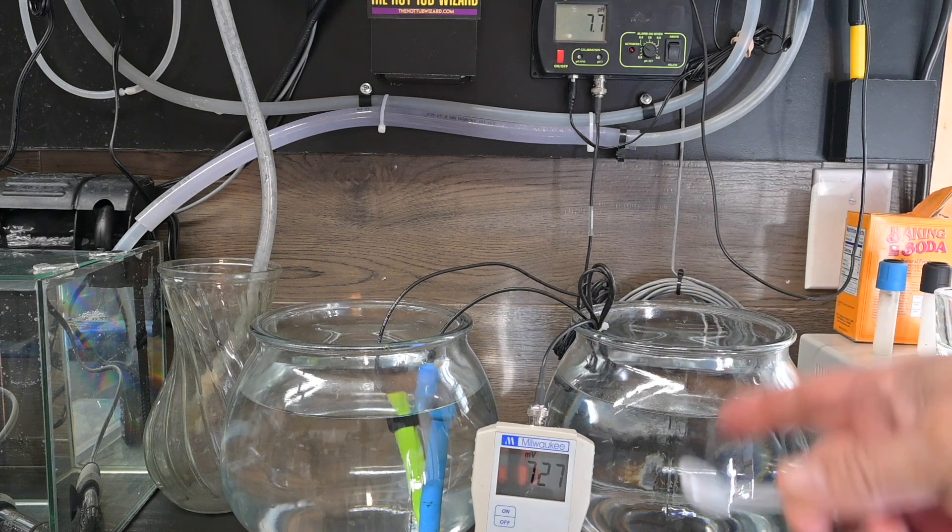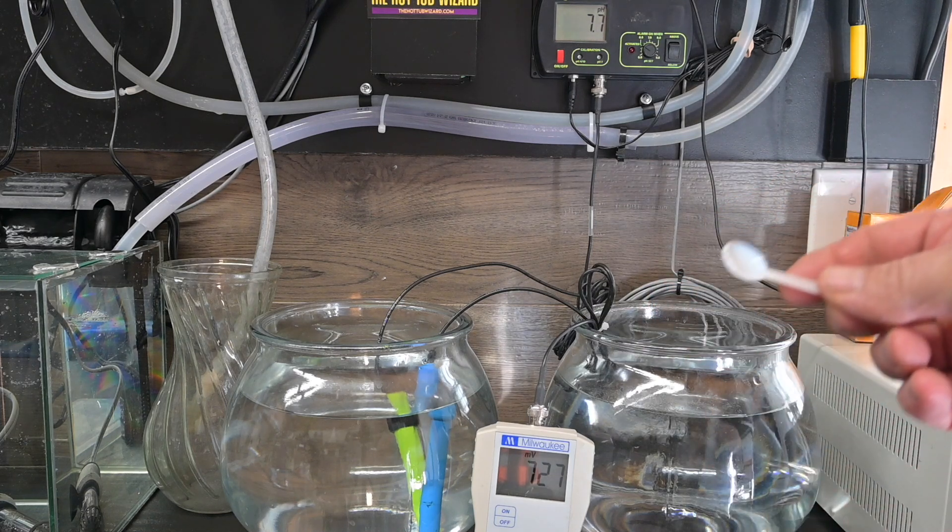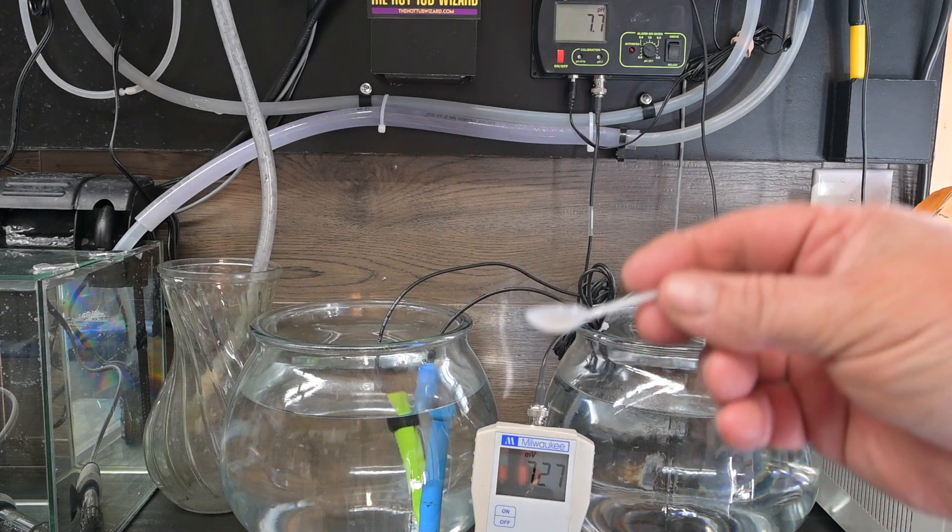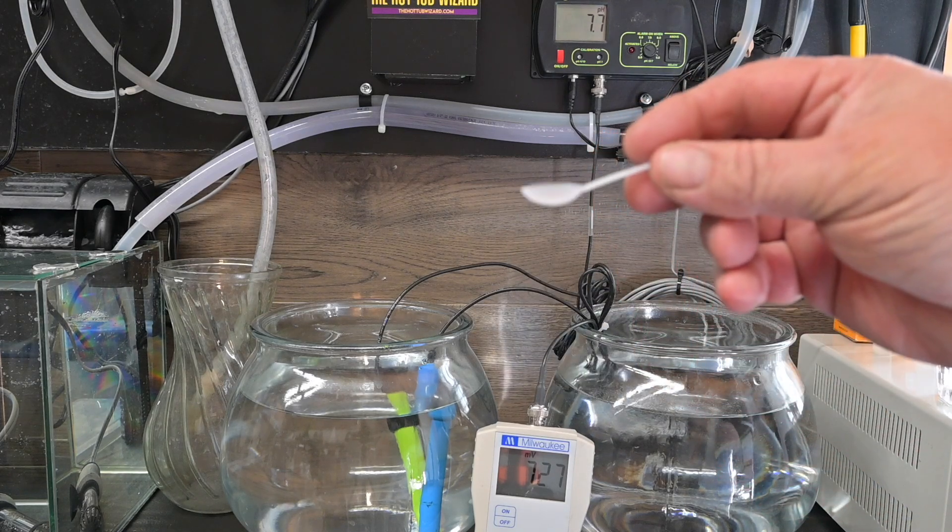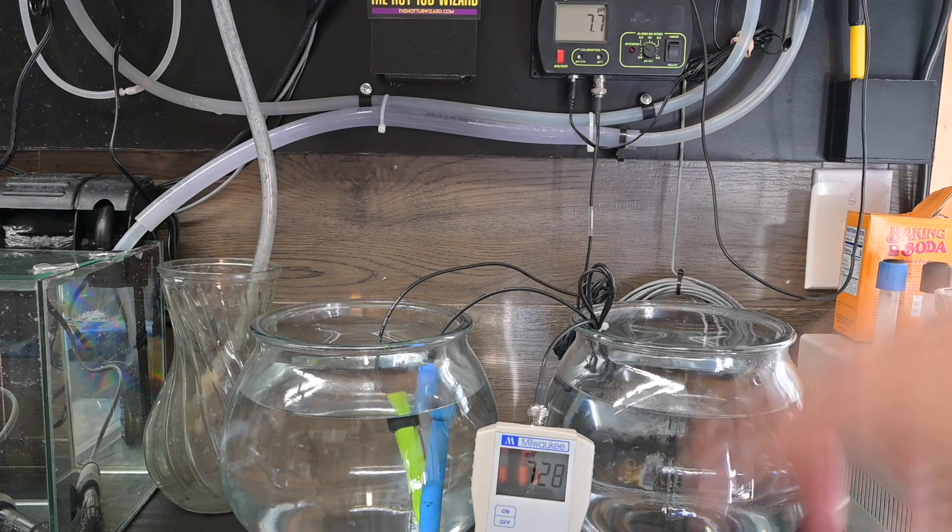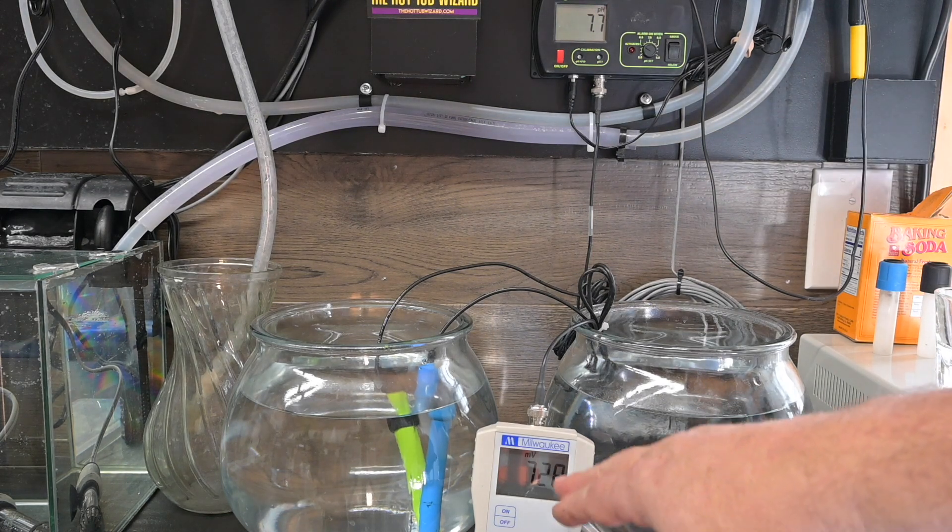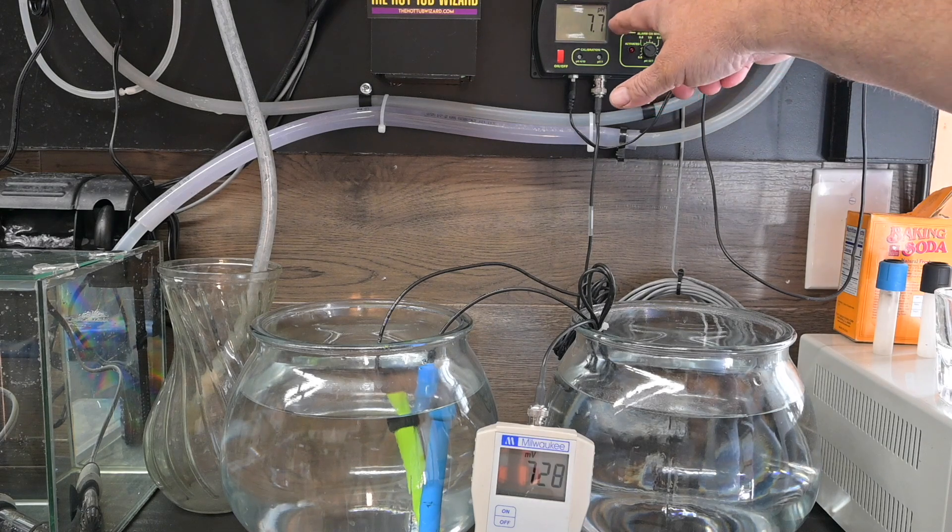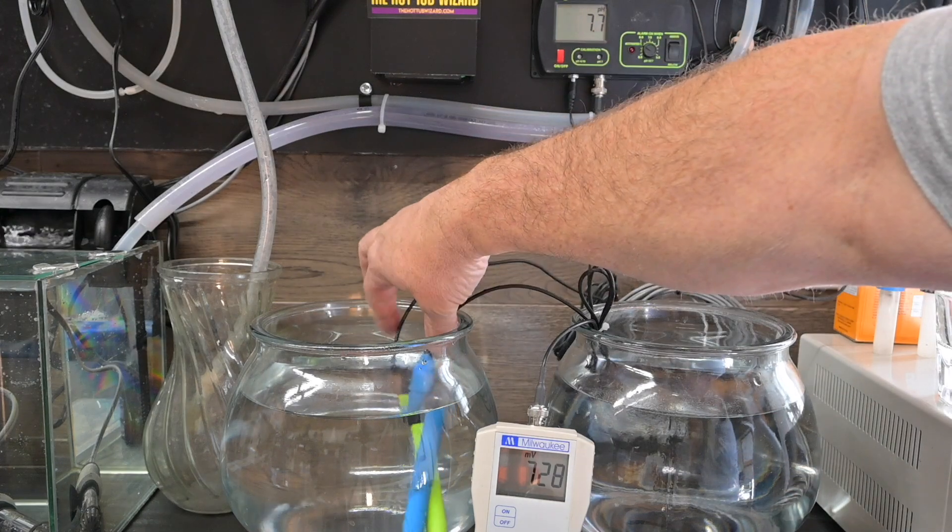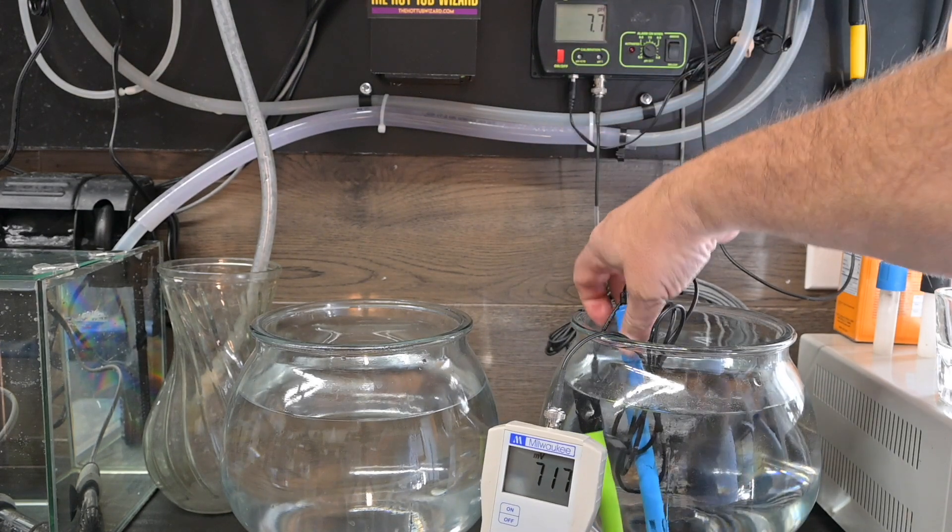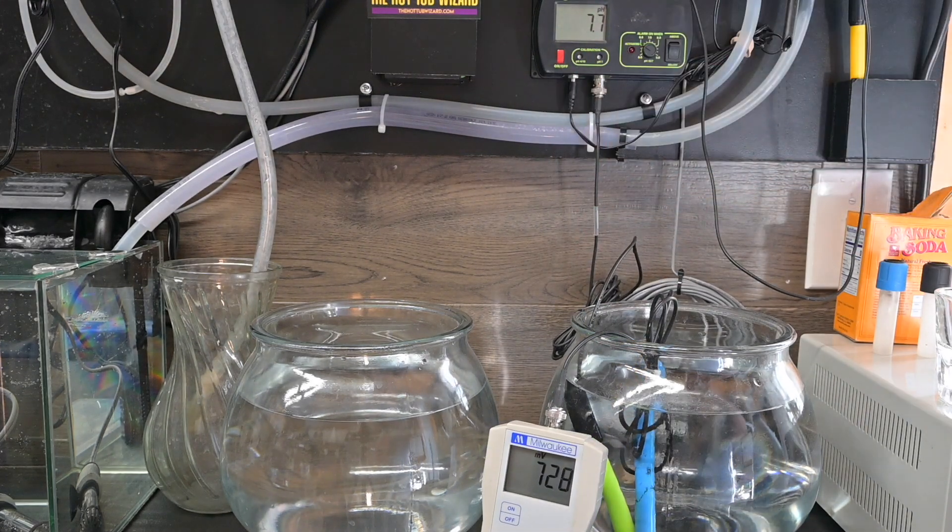We wanted to get the number above 700, which is good especially for a hot tub, but it took three of these spoons in each one. We're at 728 and pH went up slightly to 7.7.